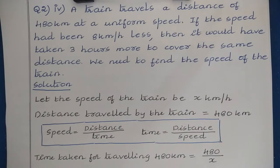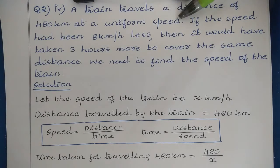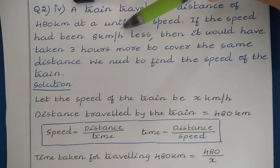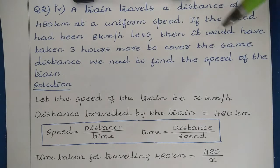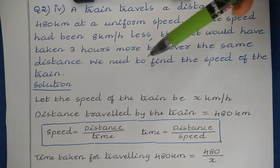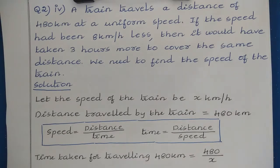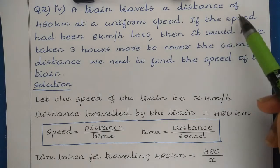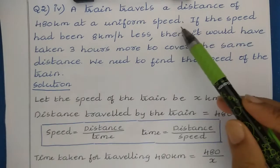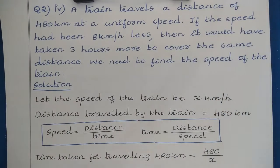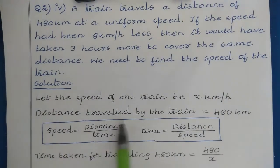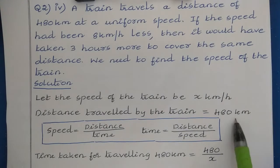Question No. 2, Subquestion 4: A train travels a distance of 480 km at a uniform speed. If the speed had been 8 km per hour less, then it would have taken 3 hours more to cover the same distance. We need to find the speed of the train. The distance traveled by the train is 480 km.